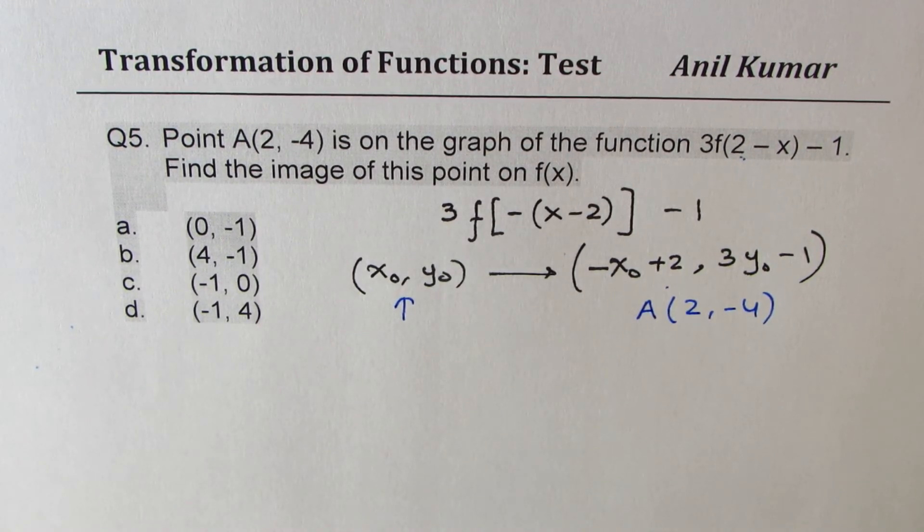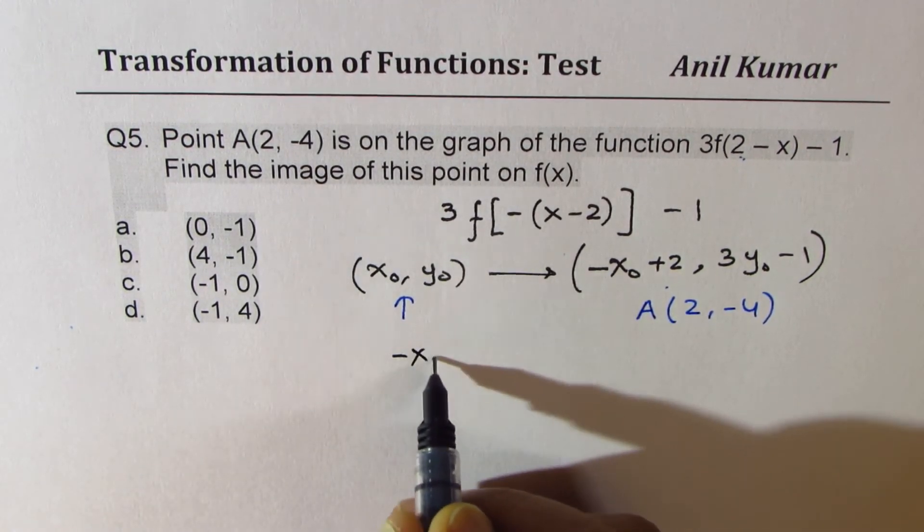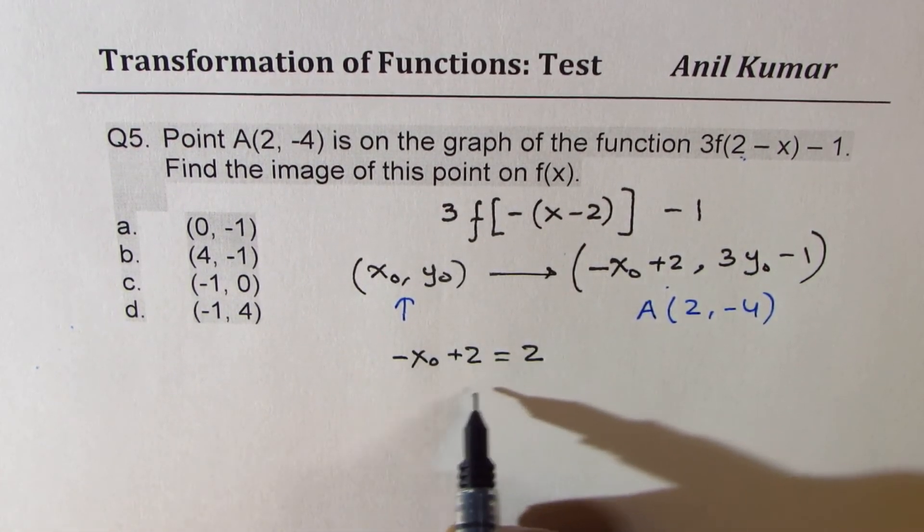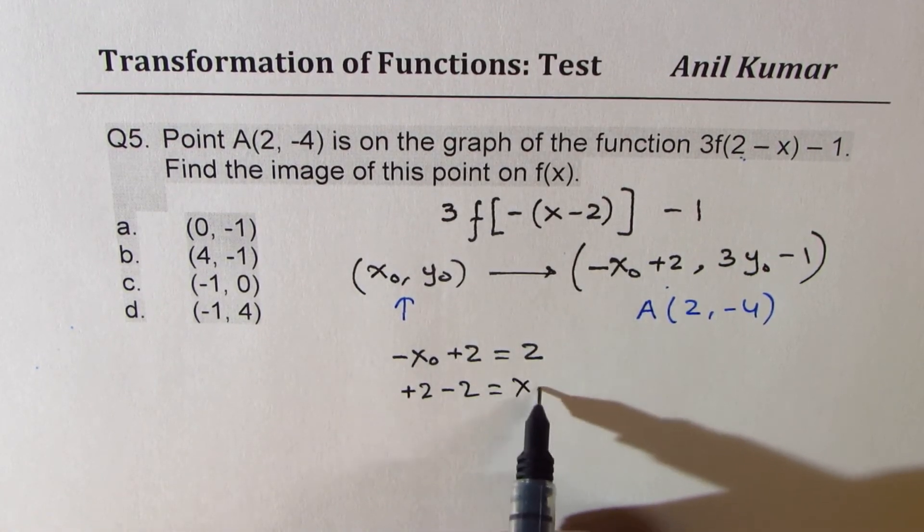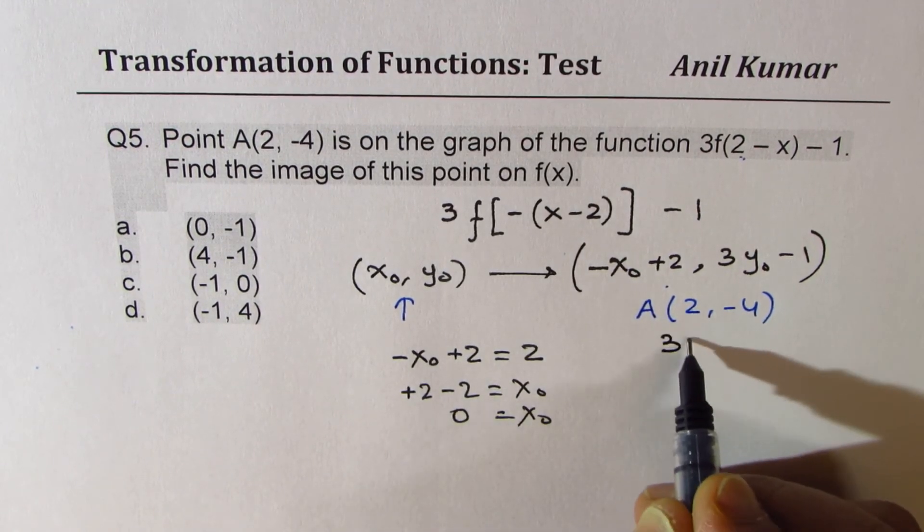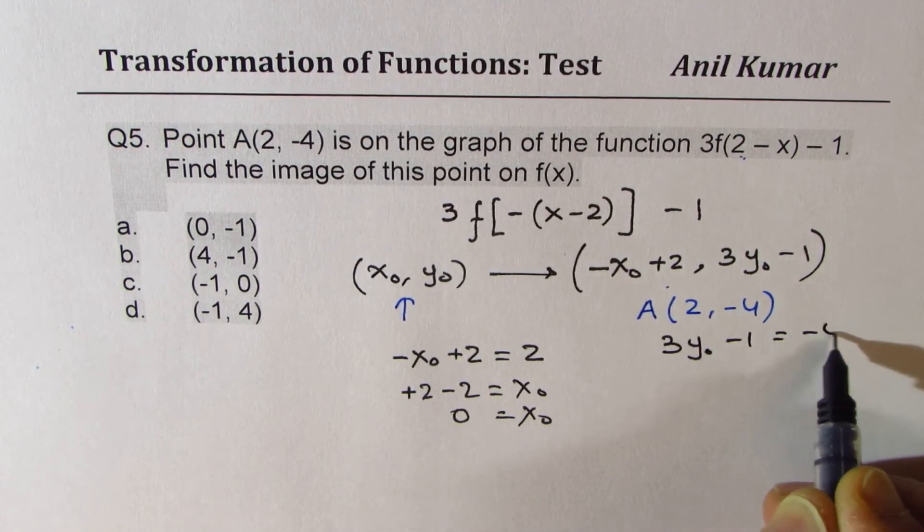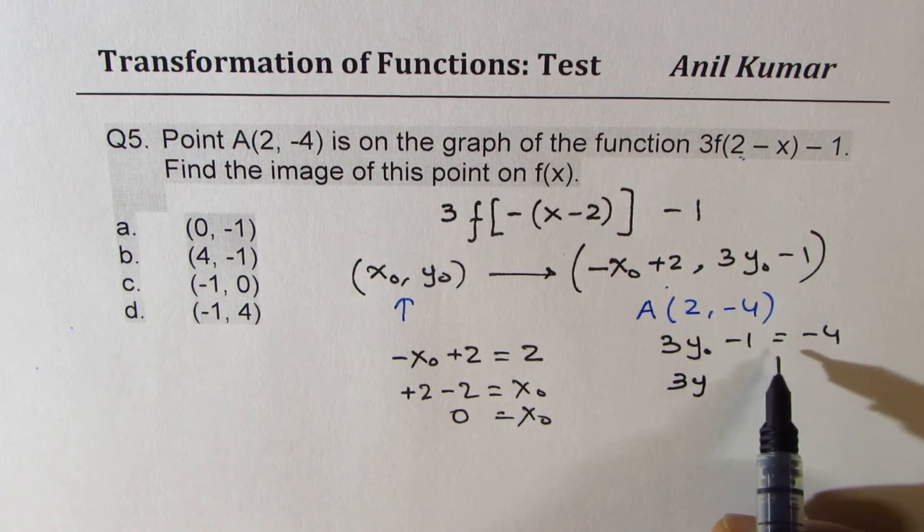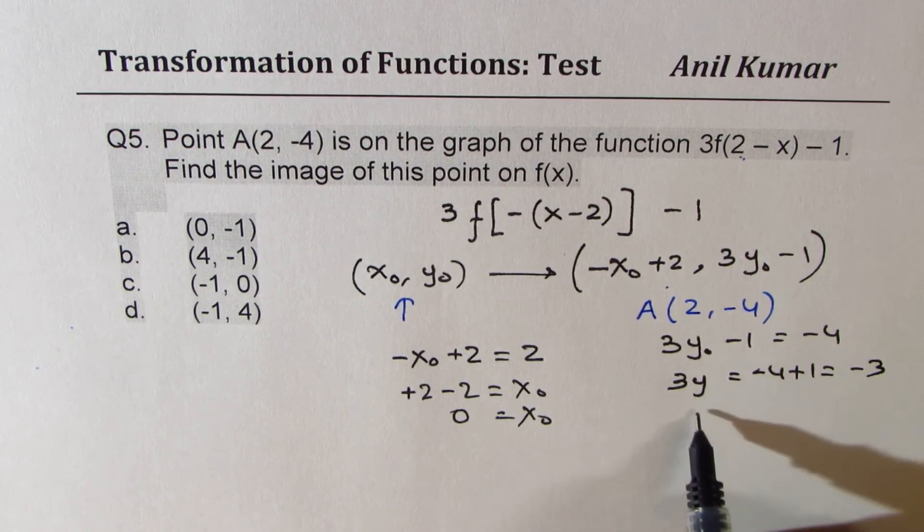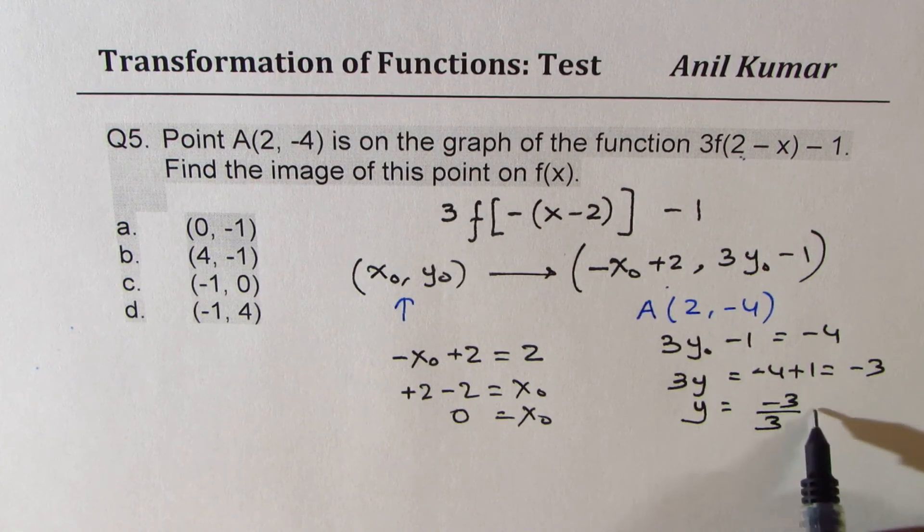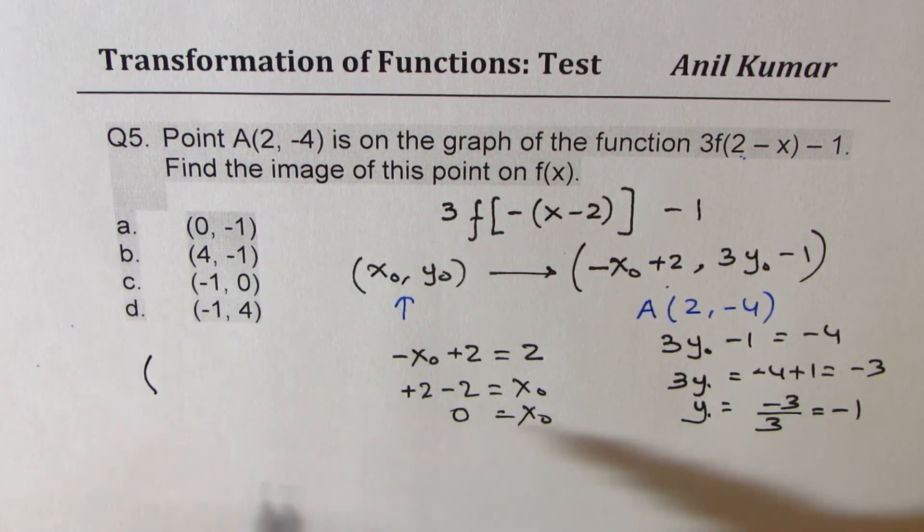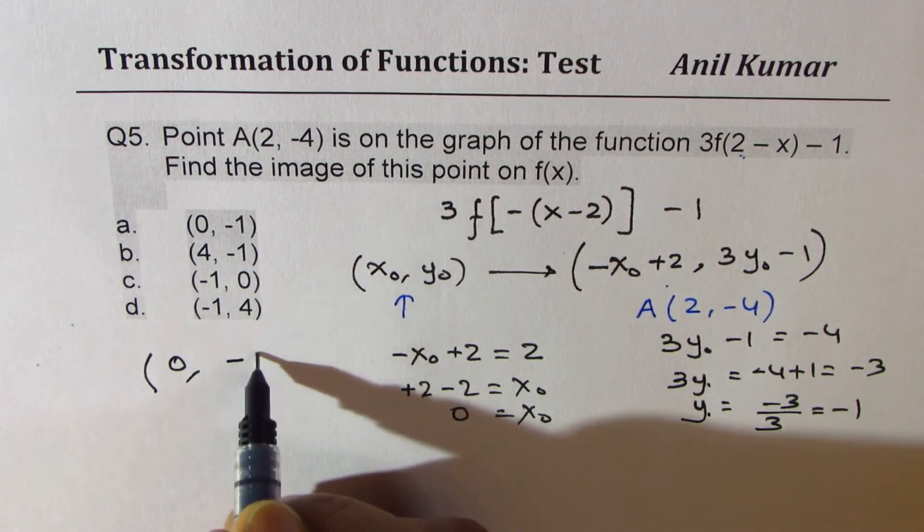You get an idea? So what we are given is minus x0, the original point, plus 2 is 2. So from here, we can do plus 2 minus 2 is x0. So x0 is equal to 0. On the other hand, for y point, 3 times the original point minus 1 is minus 4. So 3y0, we get here. Minus 4 plus 1, which is minus 3. And y value is minus 3 divided by 3, which is minus 1. So this is y0 point. So the actual points which we get are 0 and minus 1.